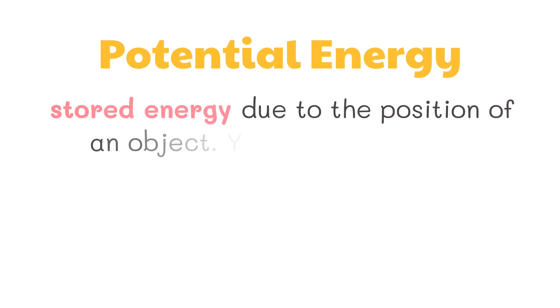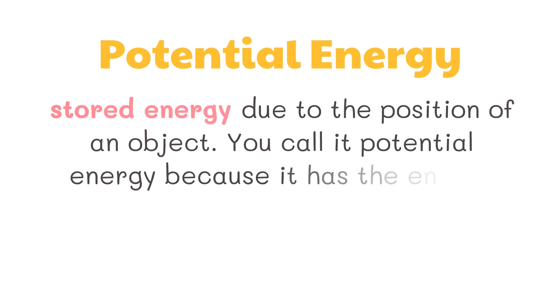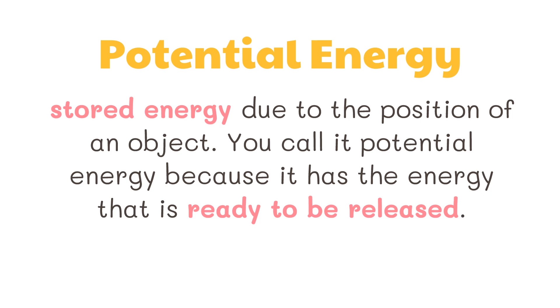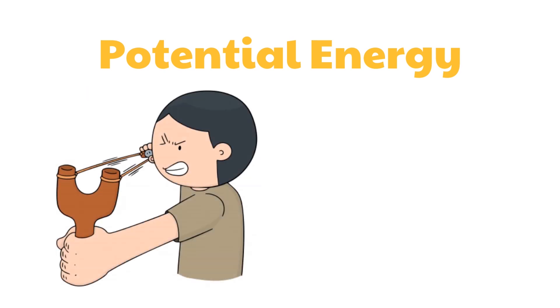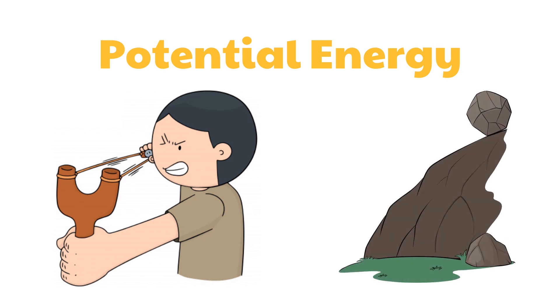Potential energy is the stored energy due to the position of an object. It is called potential energy because it has energy that is ready to be released. Examples of objects that have potential energy are a slingshot that is pulled back or a rock on top of a hill. In all these examples, the objects are in a position that will cause them to move spontaneously if they are released or poked.